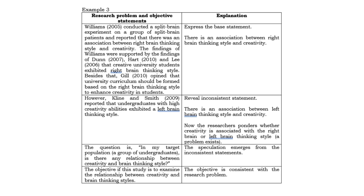Because there is a contradiction, we can now frame a research question: in a target group of undergraduates, is there any relationship between creativity and brain thinking style? That speculation emerges from the inconsistent statement. Since there are inconsistent statements, we can have our speculation, and since we have our speculation, we can proceed to framing our objective. The objective is now to examine the relationship between creativity and brain thinking style, which is consistent with the research problem. Example number three clearly shows that inconsistent evidence creates doubts that enable the researcher to draft a speculation, which will become a research question, and finally the research objective.